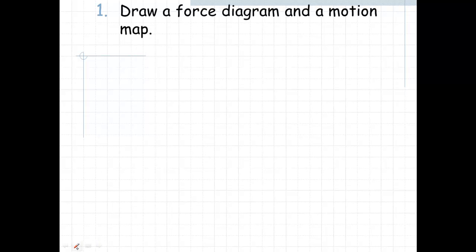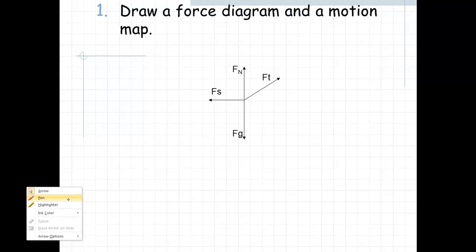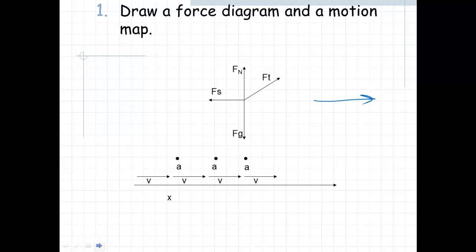First we're going to draw a force diagram and a motion map. It's really important to recognize all the forces. The force of tension is pulling up and to the right. The normal force is pointing directly up because it's perpendicular to the surface. The static frictional force is pointing in the opposite direction of motion. This object would move to the right, so the static frictional force should be pointing to the left. And of course, the force due to gravity is straight down.